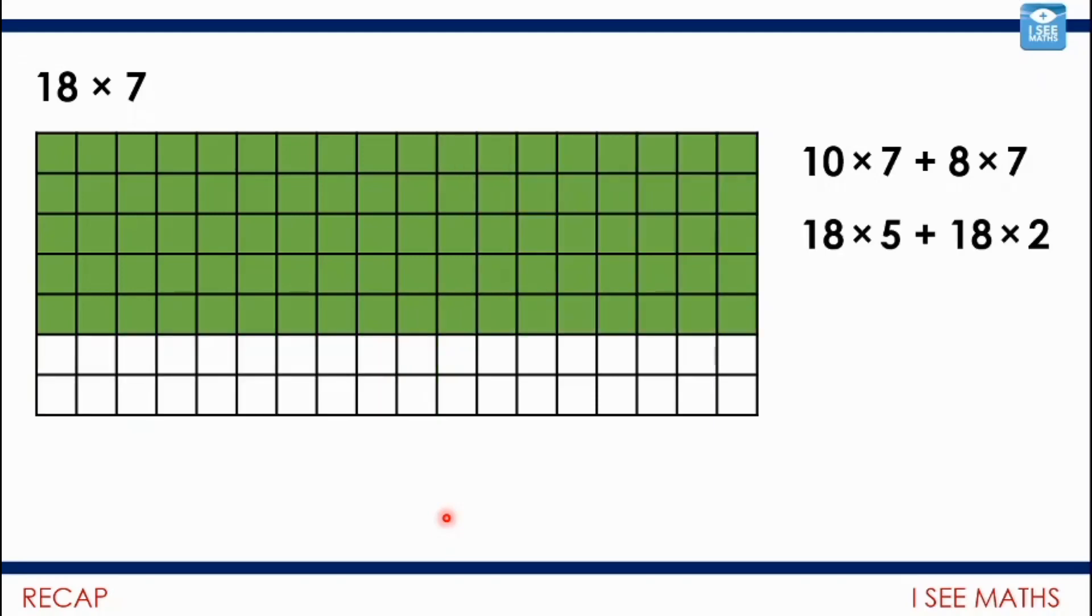Another way is rather than breaking up the 18, you could keep the 18 together and you could break up the 7 into 5 and 2. So the green area is 18 times 5. You could do 18 times 10 and halve it to do that. And then the white area is 2 lots of 18, 36, and then add it all up.